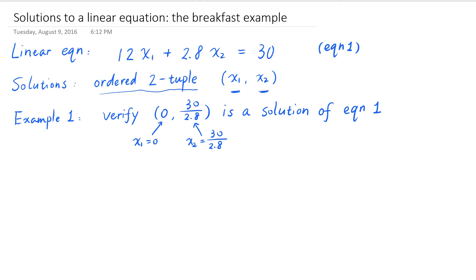In order to do this, let's plug in this 2-tuple into the original equation. So 12 times x sub 1 plus 2.8 times x sub 2, in the case where x sub 1 is 0 and x sub 2 is 30 over 2.8, is equal to 12 times 0 plus 2.8 times 30 over 2.8. That is equal to 0 plus 30, which is equal to 30, which is exactly what the equation says, and therefore this 2-tuple is a solution of this equation.